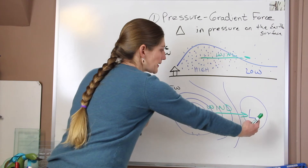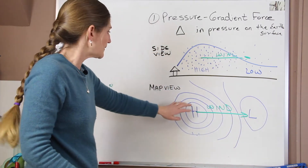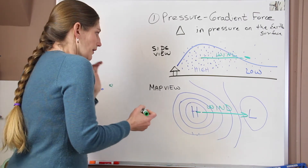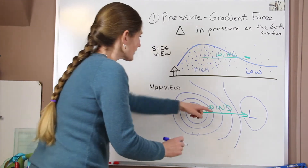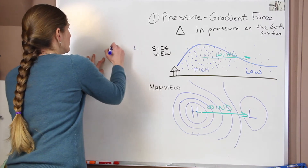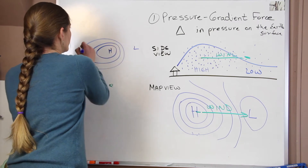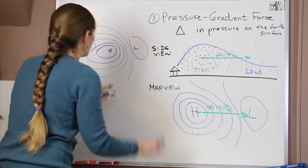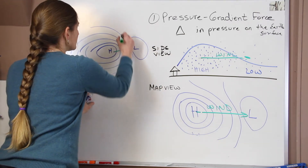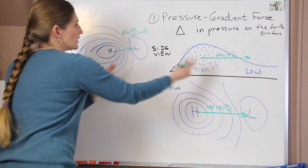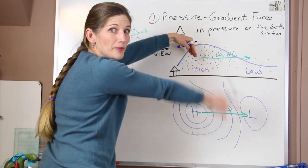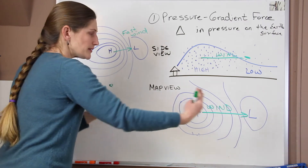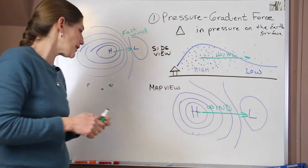Depending on how widely spaced or closely spaced these isobar lines are will determine your wind speed. The wind moves perpendicular to the isobars. If the lines are really close together — if the high and the low are close together — this will be a faster wind. Imagine the highs and lows come together: the slope increases and your ball rolls faster down the slope, giving you a faster wind. If they're farther apart, the wind is still moving from high to low, but it won't be moving as quickly. That's the pressure gradient force in a nutshell.